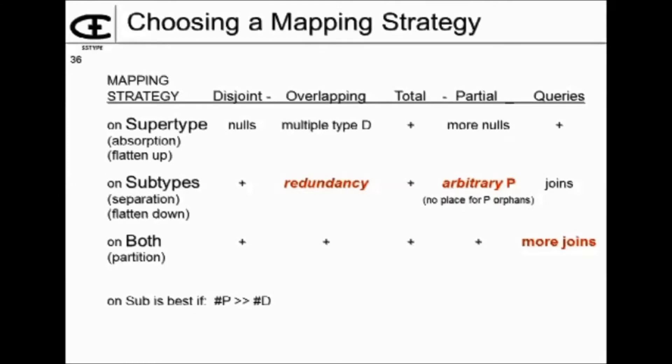There's another consideration, and that is the relative number. Let's suppose that you had a hundred attributes on the supertype, but only two or three on the subtype. You're probably not going to want to set up your tables with the subtype. You'd probably just absorb those couple of additional attributes into the supertype. That makes sense. And the reverse is true. If most of your information is with the subtypes, then you'd want to flatten down and just pull in the information from the supertype.